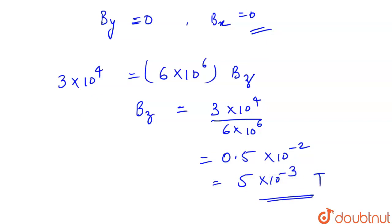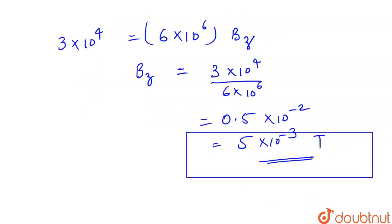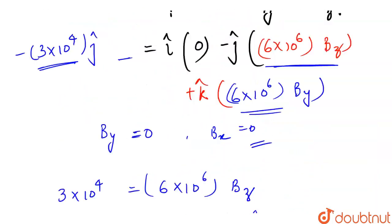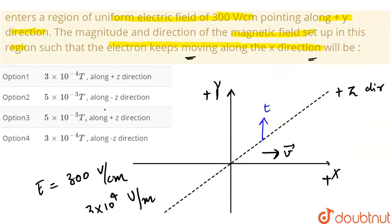The unit is Tesla. This is the magnitude of the magnetic field, acting in the positive Z direction. Had it come out with a negative sign, the direction would be along minus k cap. But the direction comes out to be positive Z axis. Matching with the options, 5 into 10 to the power minus 3 Tesla along positive Z direction — option 3 is correct.